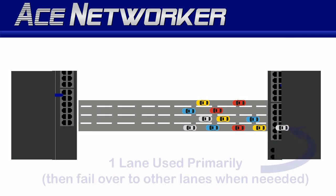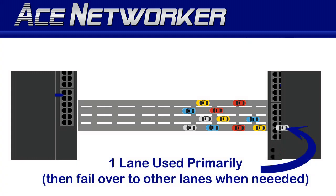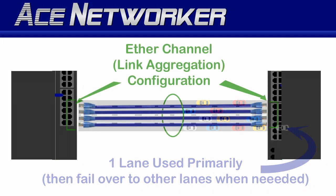Network devices will use one of those lanes — one of those connections, typically a single network cable in that ether channel — primarily until more traffic flow is necessary or more bandwidth is needed. Then they will start using the other lanes or interfaces or cables in between to provide more bandwidth.